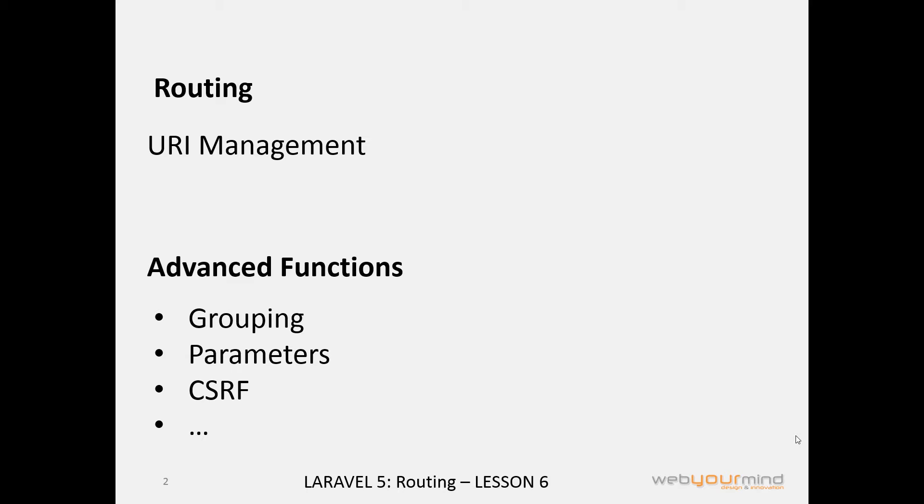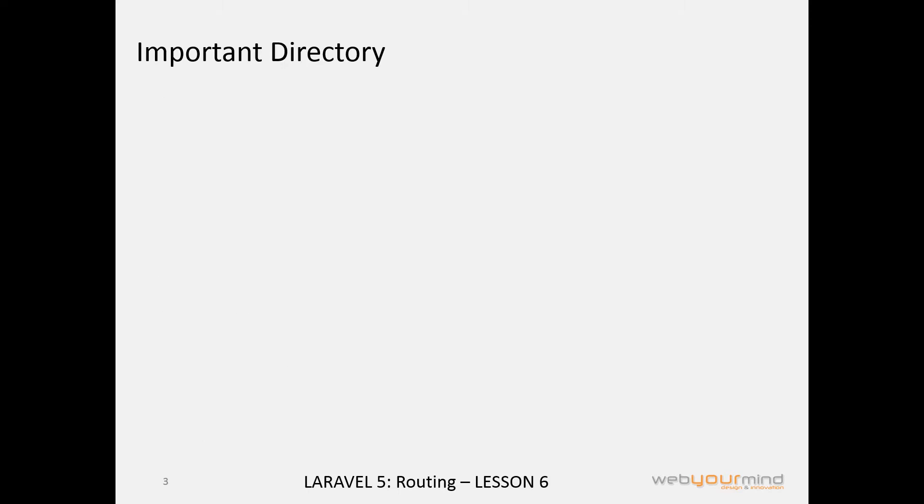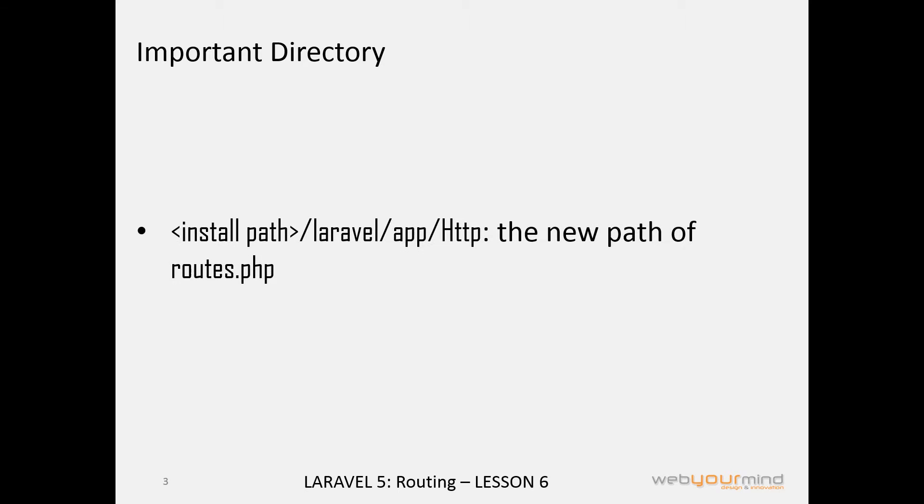Maybe we will see some of them in this lesson. One of the first changes we can notice from Laravel 4 to Laravel 5 is the home directory of the routes.php file. From now, starting from now, we can find it in the install path slash laravel slash app slash http.